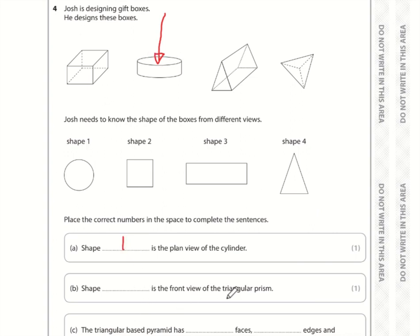The front view of the triangular prism. This is the triangular prism here. It's a triangle all the way through. So if we're looking at this from the front, then all we will see is this triangle here. That is shape 4.